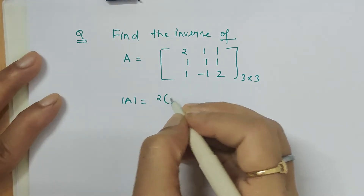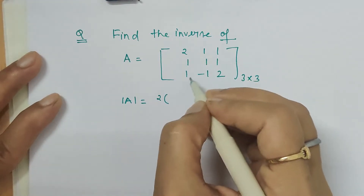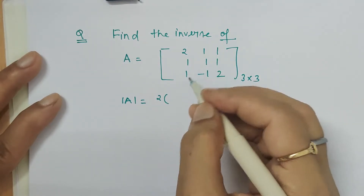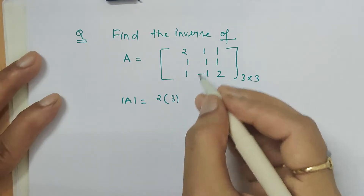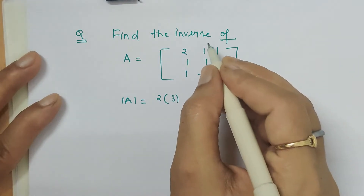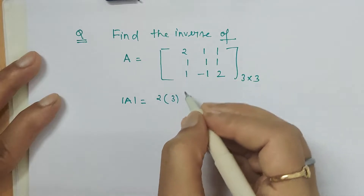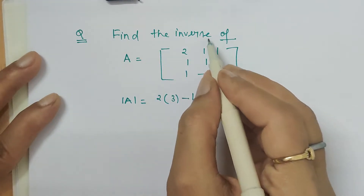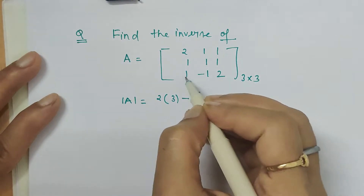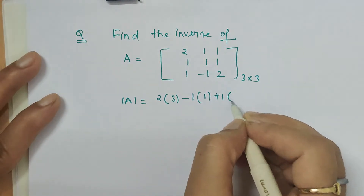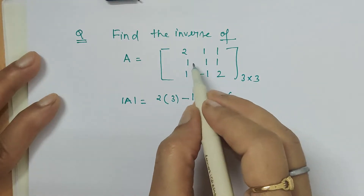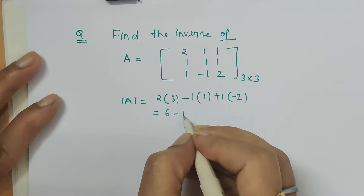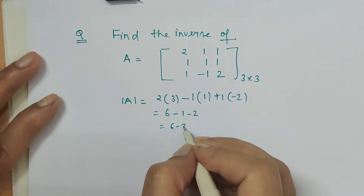I am calculating it now. For the first element, eliminate its row and column: 1 times 2 is 2, minus of minus 1, so 2 plus 1 is 3. For the center element, its position is row 1, column 2, so 1 plus 2 is 3 — it will have a negative sign. Eliminating its row and column gives 2 minus 1 is 1. For the last element, minus 1 minus 1 is minus 2. So the determinant is 6 minus 1 minus 2, which is 6 minus 3, equal to 3.